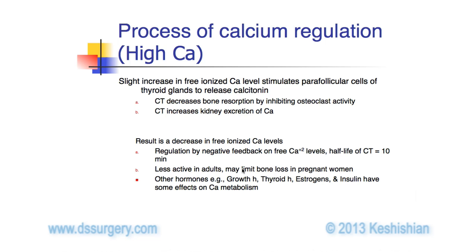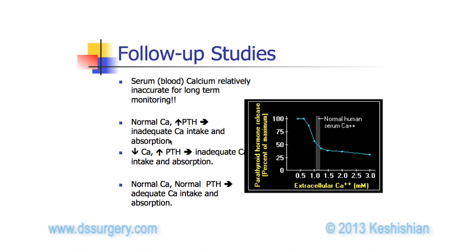What happens when there is a high calcium level? This causes the opposite: parathyroid hormone is decreased or normalized, and calcitonin is released. This results in taking calcium from the bloodstream and depositing it in the bone, and increases calcium excretion by the kidneys. Calcium is regulated over a relatively narrow range, with normal calcium level being the end result.